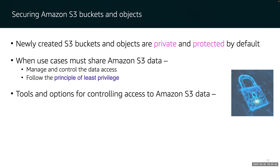Pay attention to this exam question: you can create S3 access points. Access points are unique hostnames that enforce distinct permissions and network controls for requests made through them. Customers with shared datasets can scale access for many applications by creating individualized access points with names and permissions customized for each application. You can also use access control lists (ACLs) — similar to what we'll do in the lab today — defined over the bucket and the object. Do not set access that is too open or permissive. Finally, you can use AWS Trusted Advisor's bucket permission check feature to find permissions that are open to global access.